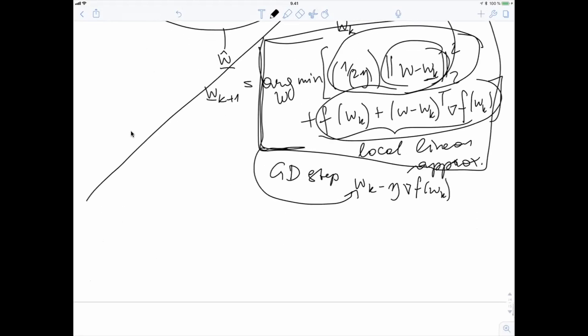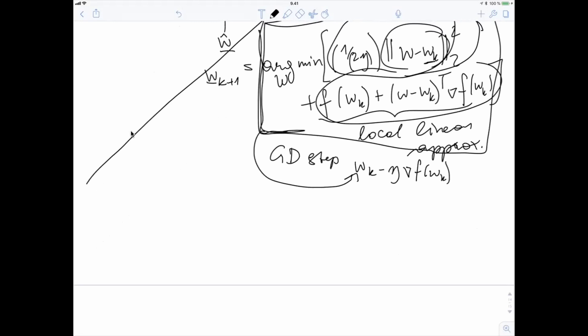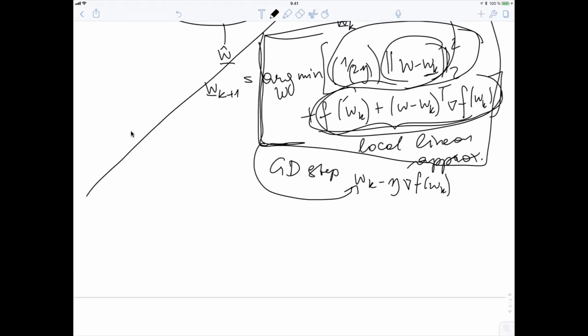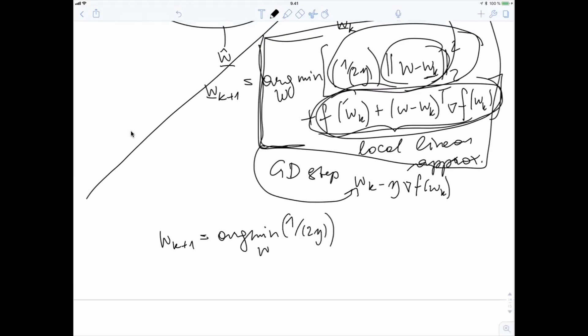So the next step towards generalizing gradient descent is now to say, why don't I use here the objective function itself instead of an approximation? So let's now use another update. We use the update argmin w one over two eta, and then the distance to the current parameter vector Euclidean distance squared plus f of w. So instead of minimizing here or using here the local linear approximation, we use the function itself.